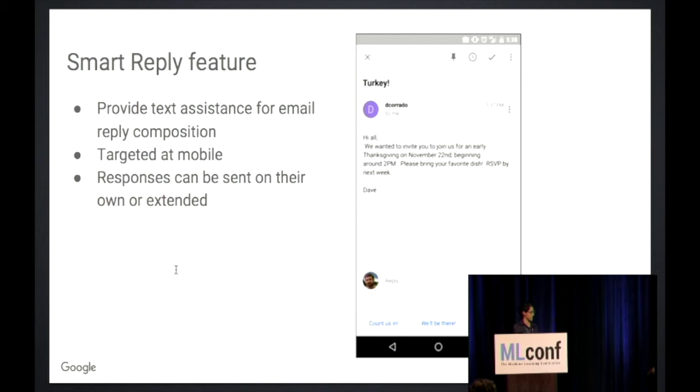So fast forward some months, and we actually did launch this into production last year. This is what it looks like in production. Here's just an example. It's something about inviting people over for dinner. The suggested replies are things like 'count me in,' 'we're free,' and 'sorry, I can't make it.'